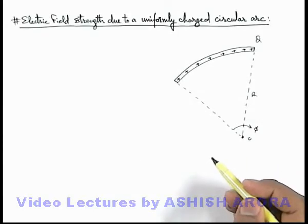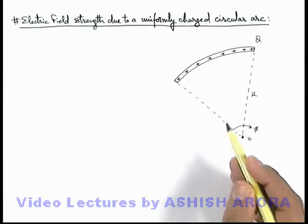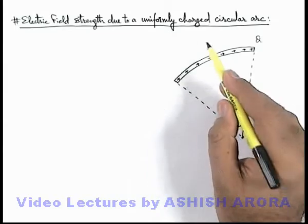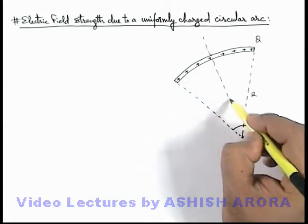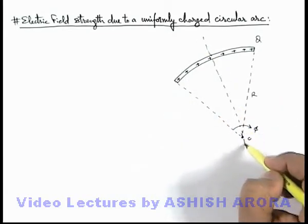In this situation we are required to find the electric field strength due to this arc at its center. So we can directly state this electric field will exist in the direction of its angle bisector. We draw the angle bisector, it will be in this direction.